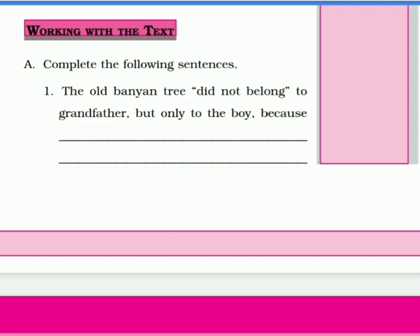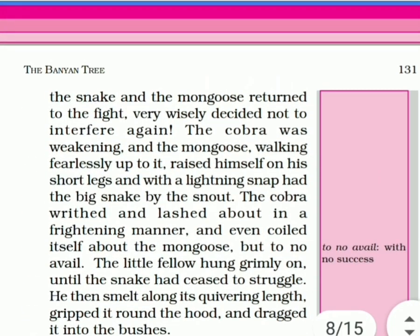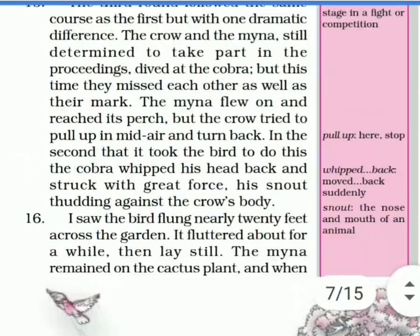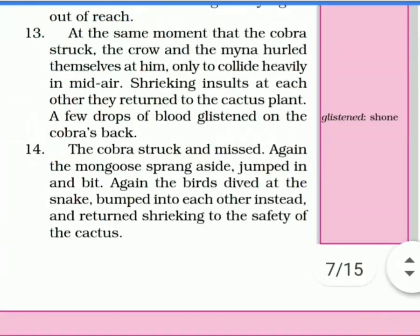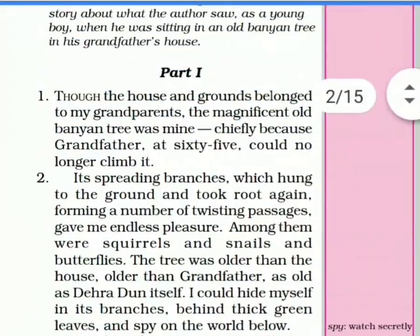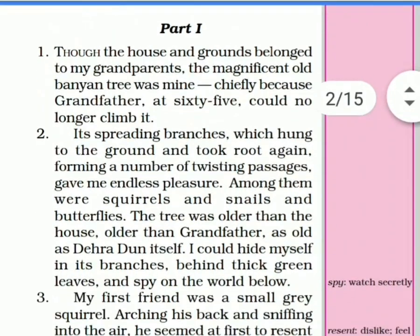Toh sabse pehle jo hai Part A, complete the following sentences. Pahla sentence jo hai: 'The old banyan tree did not belong to grandfather, but only to the boy because...' Abhi isko dekho, humne complete karna hai. Toh iske liye humne book kholli hai apni, jaise humne ye starting mein padha tha.